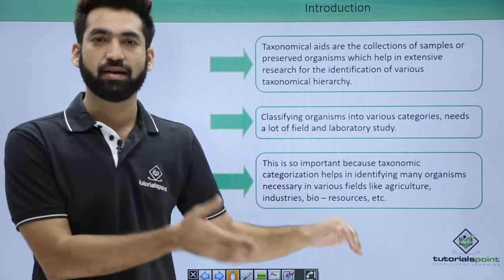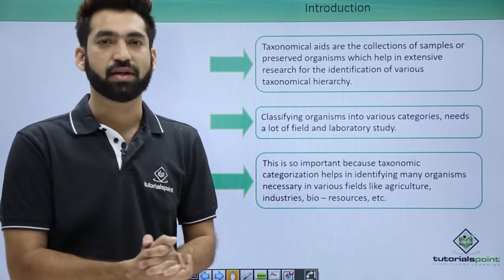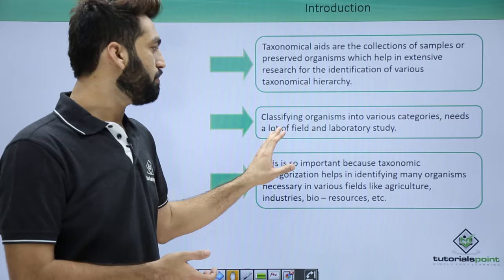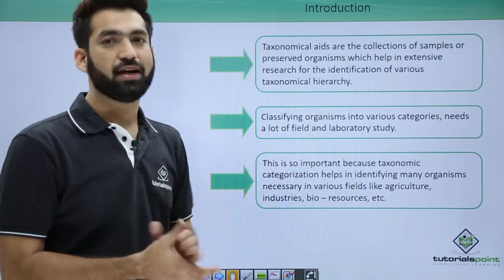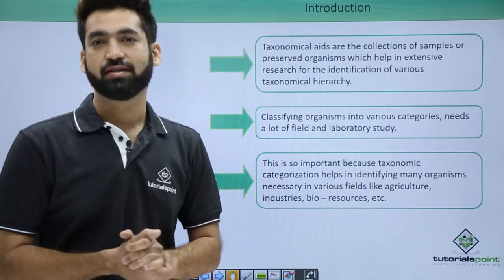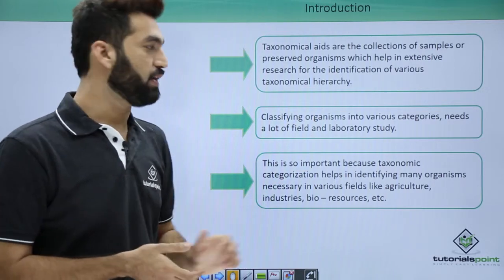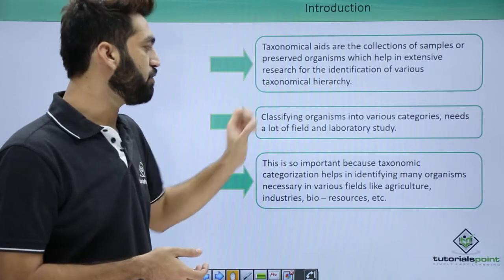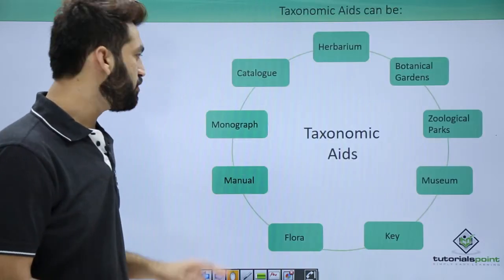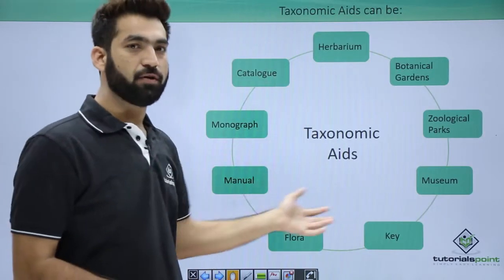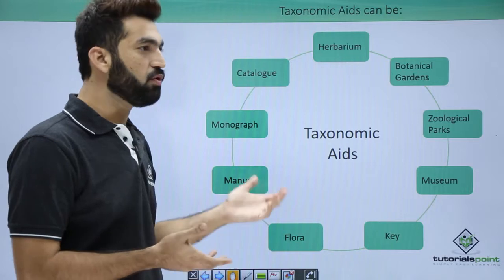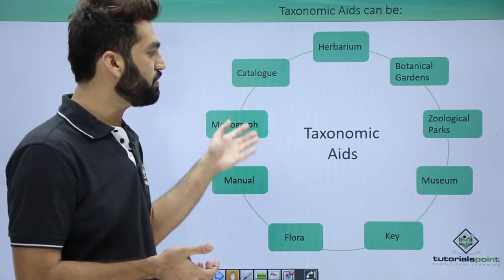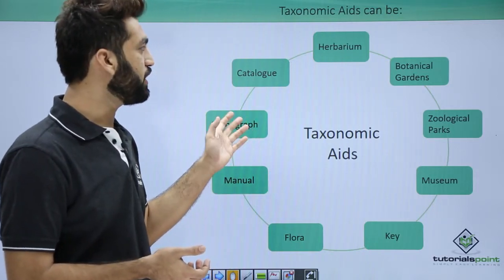There is a lot of field and laboratory research required for maintaining taxonomic aids. There could be more than nine types of taxonomic aids, but I have listed nine of them here.